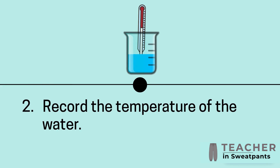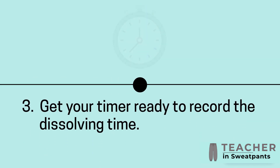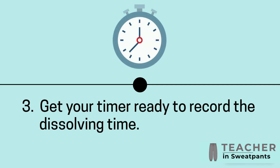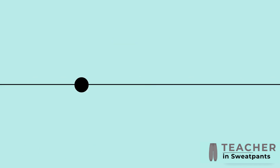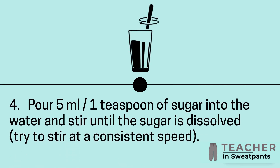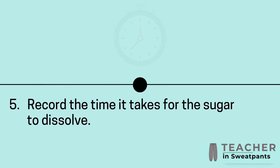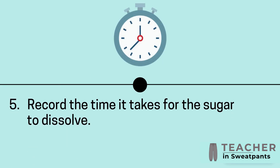Step 2 — record the temperature of the water. Step 3 — get your timer ready to record the dissolving time. Step 4 — pour 5 milliliters or one teaspoon of sugar into the water and stir until the sugar is dissolved. Try to stir at a consistent speed. Step 5 — record the time it takes for the sugar to dissolve.